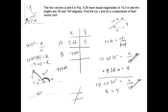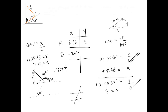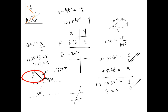For the y component of vector B, the opposite side of the triangle represents it, so we use the sine function. Sine of 45 degrees equals opposite over hypotenuse, giving the y component as 10 sine of 45. Looking carefully, the y component points upward, so it is positive — 10 sine of 45 equals 7.07. We enter positive 7.07 into the table.